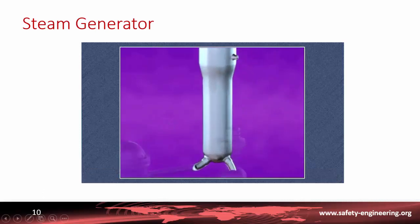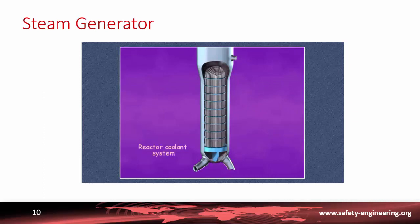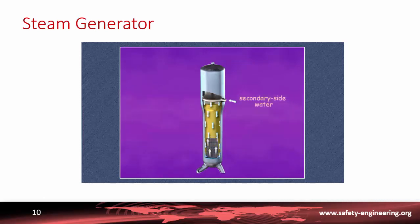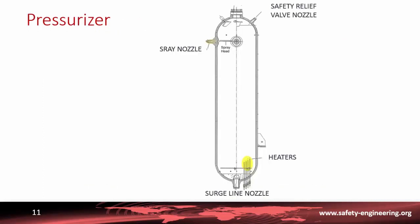In each reactor coolant system loop there is a steam generator, constituting the means of exchanging heat between the primary and secondary systems. The primary coolant from the reactor vessel enters at more than 320 degrees, circulates through a bundle of U-tubes where it gives up its heat as it is cooled by some 40 degrees, then leaves toward the pump. The secondary side water enters via the top of the steam generator, is channeled down to the bottom along the periphery, then rises up the center between the tubes, where it is vaporized. The steam produced leaves from the top of the steam generator and plays an important safety role by removing heat produced in the core.